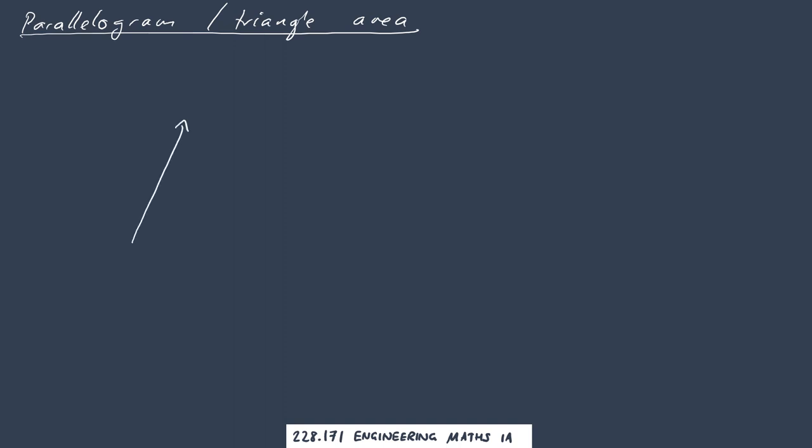So if I have vectors u and v, and what I actually want to find is this shaded area here, then I can remember from trigonometry and geometry from school that the area here is equal to...